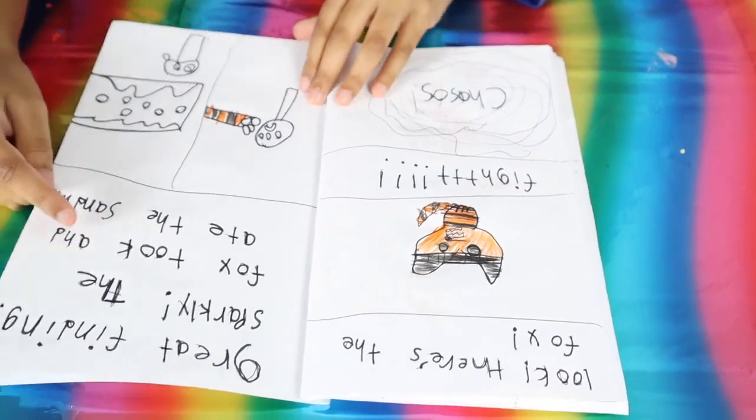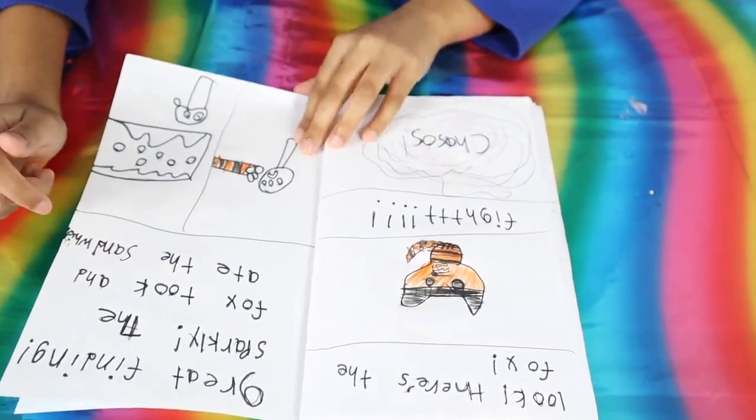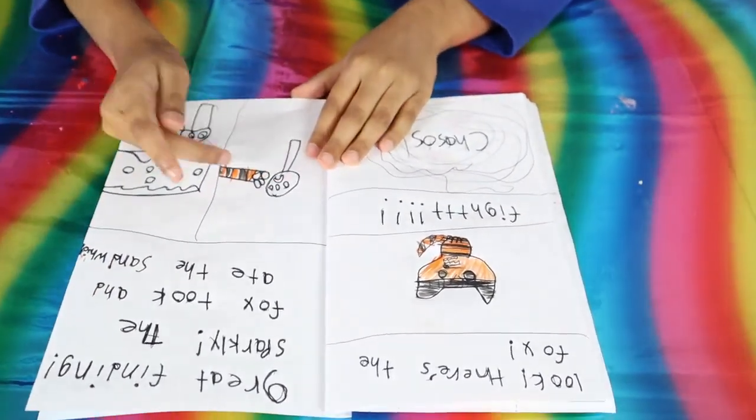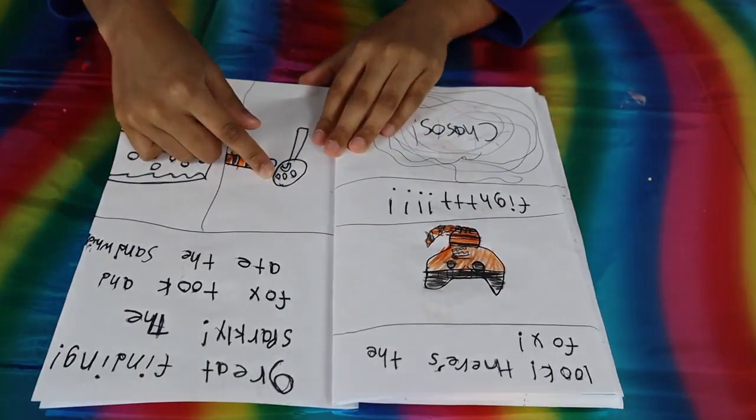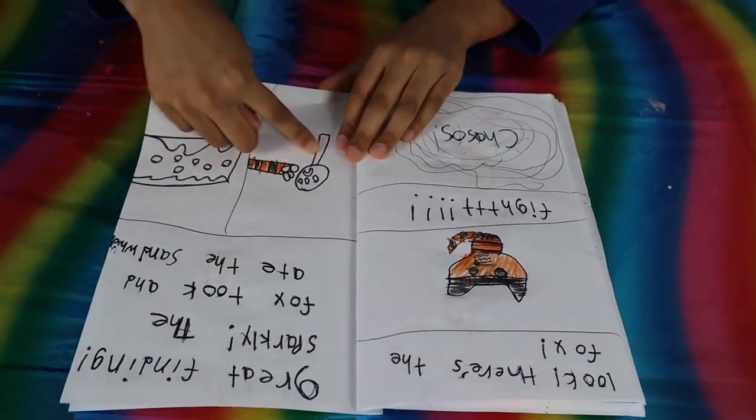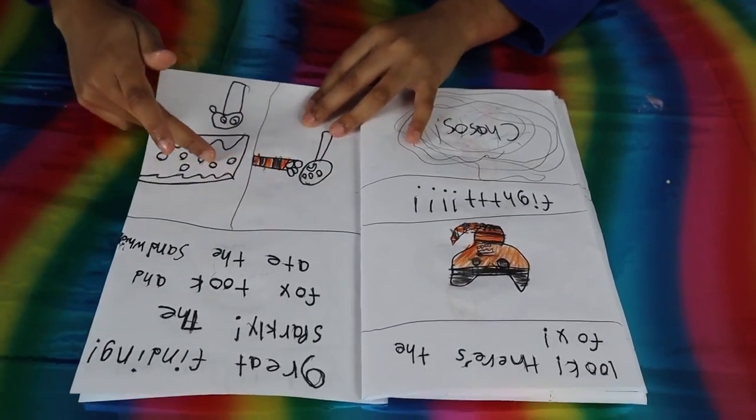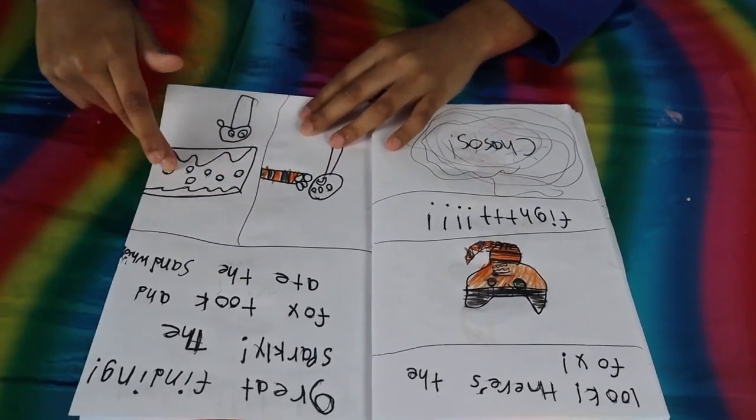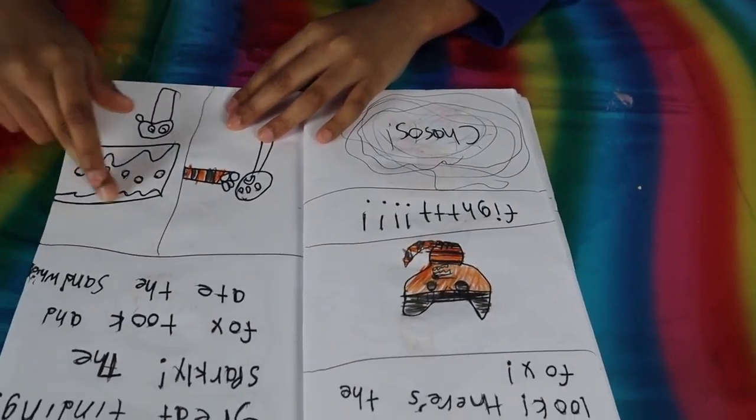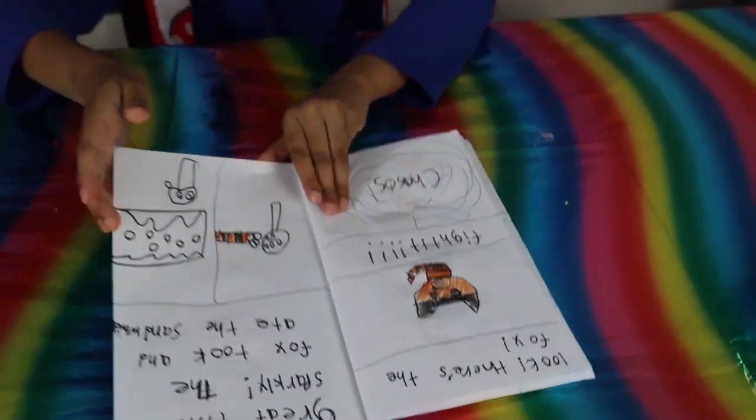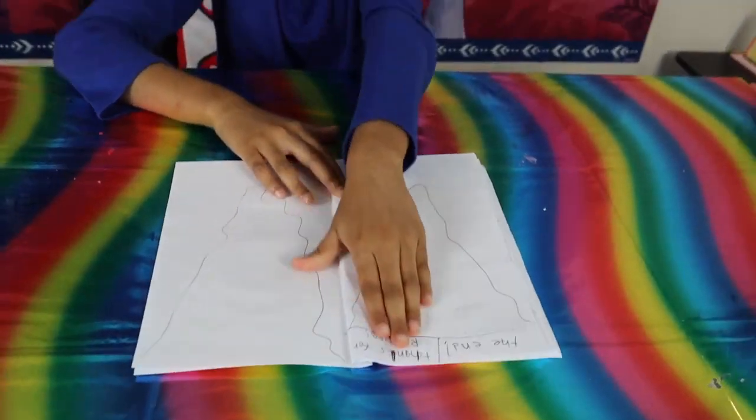The fox took and ate the sandwiches. So, they already got the evidence. See? They looked in the magnifying glass. Look at that paw print. Same. Look at the crumbs in his mouth. He was still eating. Same. The end.